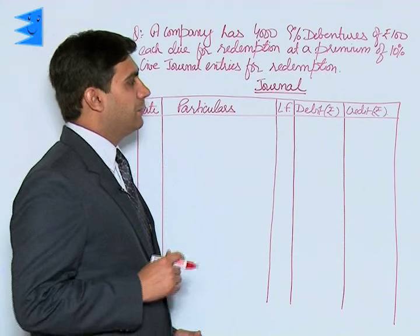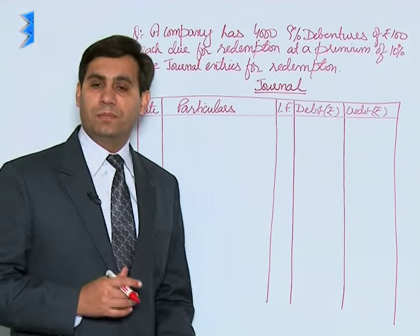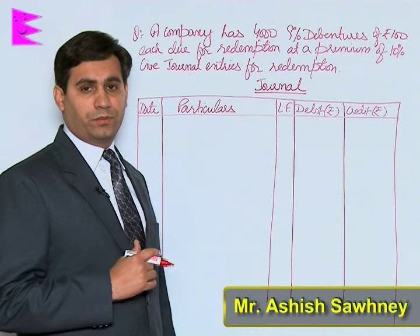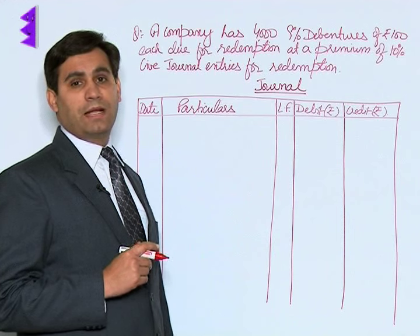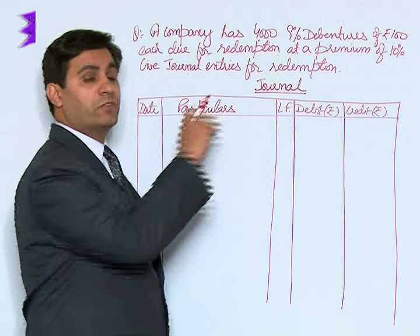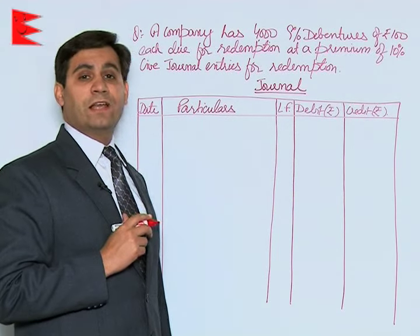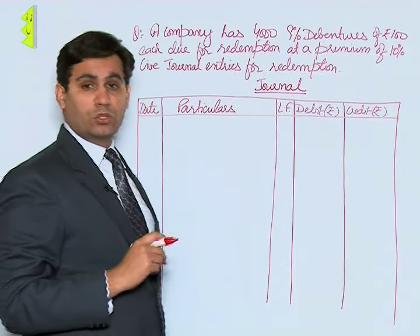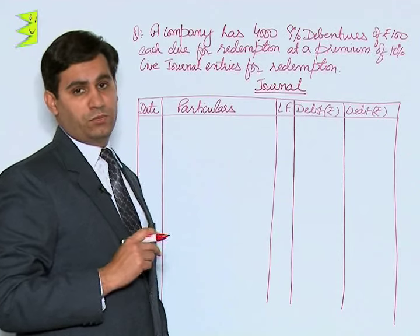A company has four thousand 9% debentures of rupees hundred each, due for redemption at a premium of 10%. Give general entries for redemption. It is a clear-cut case of redemption in lump sum at maturity. In this case, four thousand debentures of rupees hundred each means total debentures of face value equal to four lakh rupees — that is four thousand into hundred — are due for redemption.